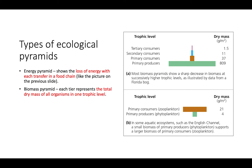Another kind of ecological pyramid is a biomass pyramid, like these two over here. In a biomass pyramid, each tier represents the total dry mass of all the organisms in one trophic level. For example, in this biomass pyramid, we have 809 grams per meter squared of primary producers, 37 of primary consumers, 11 of secondary consumers, and 1.5 of tertiary consumers.